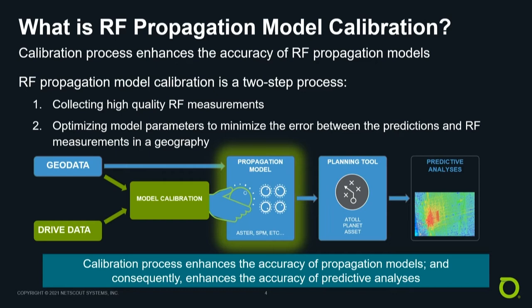In reality, these knobs and dials are parameters within a mathematical formula, and there are hundreds of them that change how the signal propagation prediction behaves. The calibration is a two-step process: in the first step, we collect high-quality RF ground truth measurements. In the second step, we optimize the model parameters so that the error between the predictions and the ground truth measurements is minimized, making the models accurate. In short, calibration is the process of customizing and improving the accuracy of propagation models for a given geography and frequency.